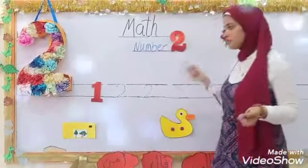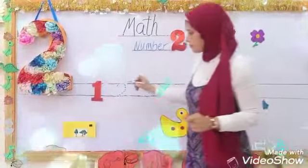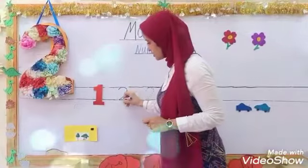Okay, what's after number one? Number two. How do we write number two? Number two. Curve slash sleeping line.